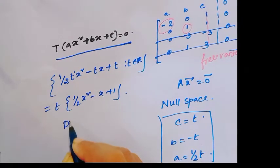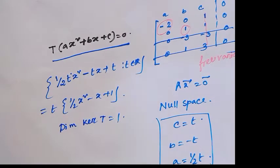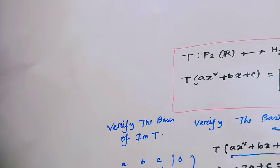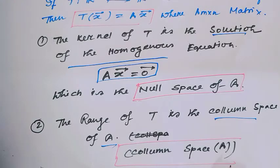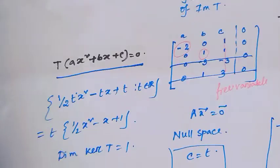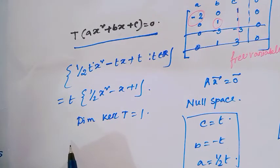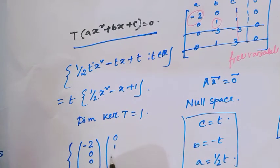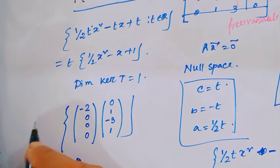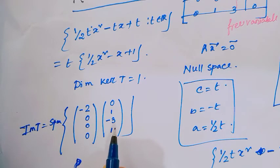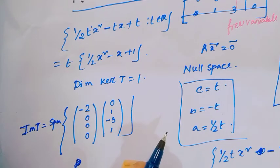Now verify the basis of the image. The image means the column space of A. Since two columns are pivoted, the basis of image T consists of [−2; 0; 0; 0] and [0; 1; −3; 1]. These two vectors are linearly independent, so they form the basis of image T, and the dimension of image T is 2.